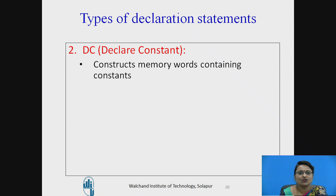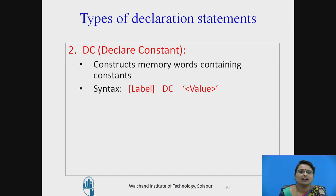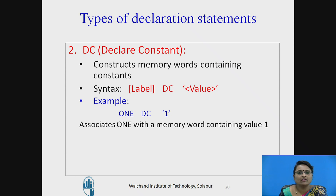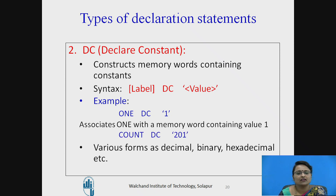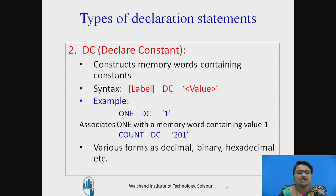Declare Constant (DC) declares a memory word and assigns a constant value to it. The mnemonic used is DC. The syntax is the same: label, DC mnemonic, actual value in single quotes. Example: '1 DC 1' associates the name 1 with a memory word containing value 1. Another example: 'COUNT DC 201' assigns the constant 201 to memory word COUNT. The values can be in decimal, binary, hexadecimal, etc.